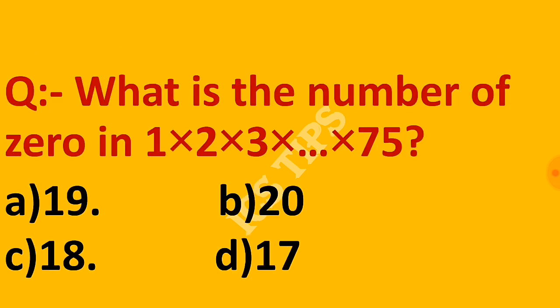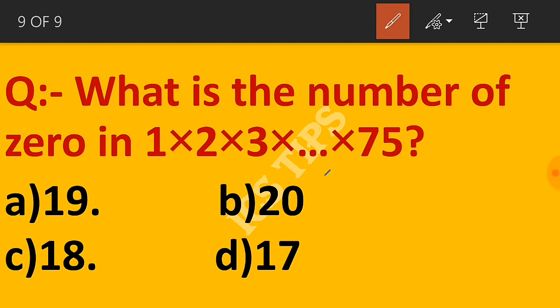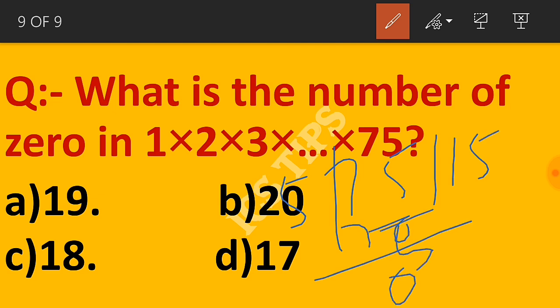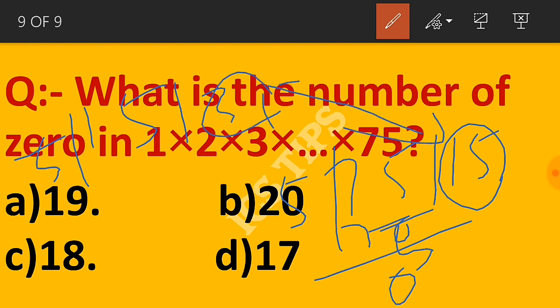Question: What is the number of zeros in 1 to 75? 75 divided by 5 gives 15. Then check 25: 75 divided by 25 gives 3. Total is 15 plus 3 equals 18.